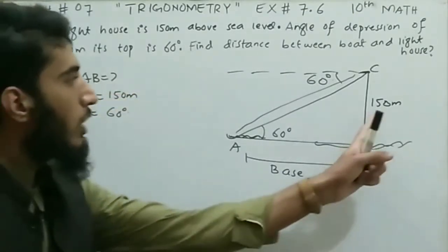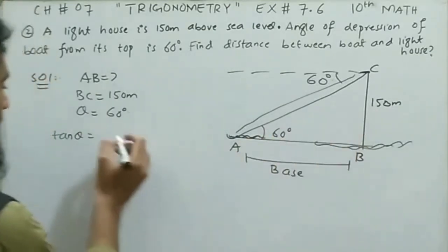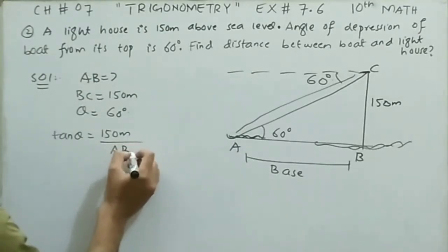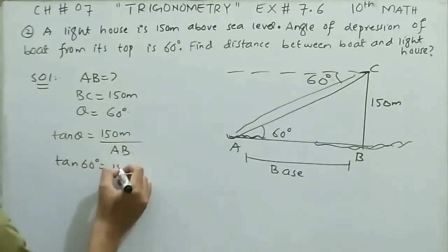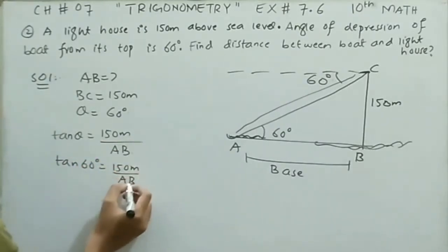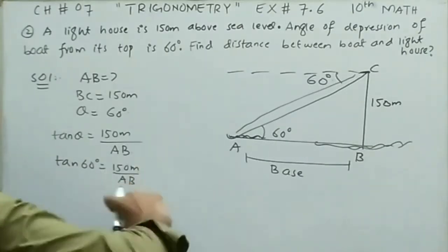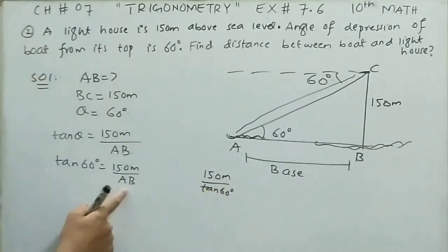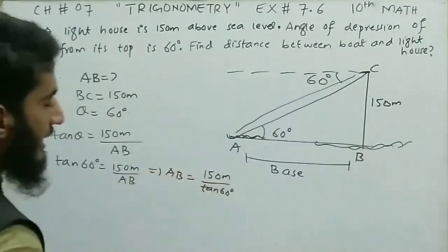Again we have perpendicular and base, so we will use tangent theta. Tangent theta equals perpendicular which is 150 meters, divided by base AB — we are going to find it. The theta is 60 degrees, so tangent 60 degrees equals 150 meters divided by AB. Shifting AB to the left and tangent 60 to the right, AB equals 150 meters divided by tangent 60 degrees.